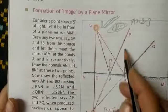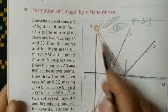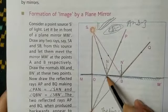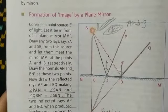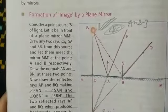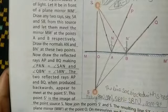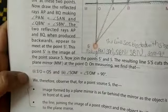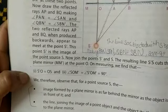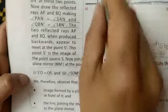Then we will look at the formation of image by the plane mirror. You can see rays from the source at different angles. They appear to meet at point S. Here, S dash O is equal to OS, and angle S dash O M dash is equal to SOM, which is 90 degrees. We conclude that the image formed by the plane mirror is as far behind the mirror as the object, and the line joining the image and the object is normal to the plane mirror.